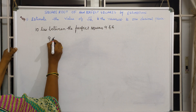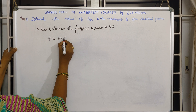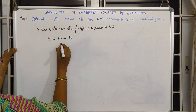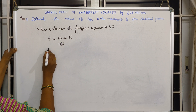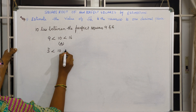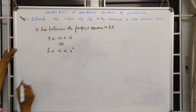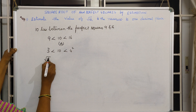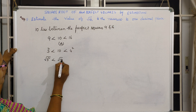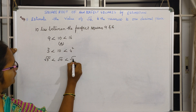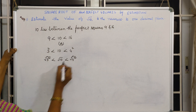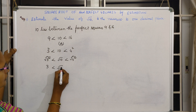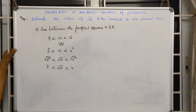Therefore, 9 is less than 10, and 10 is less than 16. Otherwise, we can write: 3² is less than 10 is less than 4². Now applying the square root on both sides: root of 3² is less than root 10 is less than root of 4². The square and root cancel, giving us 3 less than root 10 less than 4.